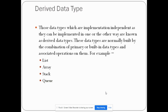We also have what we call the derived data type. Those data types which are implementation independent, as they can be implemented in one way or another, are known as derived data types. These data types are normally built by the combination of primary or built-in data types, as discussed in the previous slide, and associated operations on them. Examples include list, array, stack, and queue. We will not be discussing this in detail because these will be our next topics.